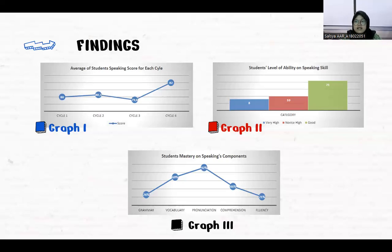In Graph 3, based on the data, we can conclude that the skill students master most is pronunciation at 92% mastery. Almost all students had ideas to get involved actively in the discussion, but because it required them to use English, it was a great challenge for them to participate. Their pronunciation improved because of their curiosity about how to pronounce unfamiliar words encountered during this course.